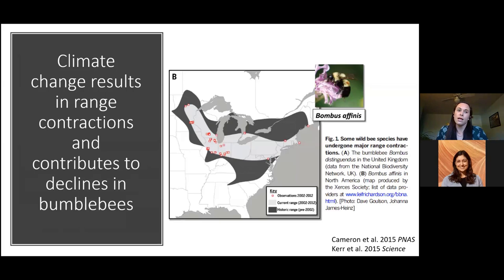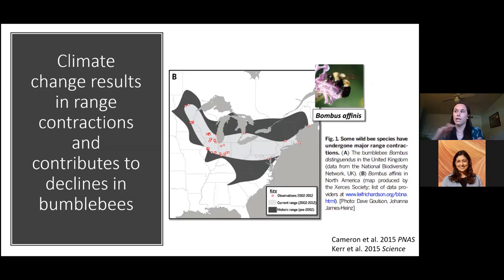Another way climate change is affecting pollinators is by causing range contractions, contributing to declines in bumblebees and likely other native bee species. This graph shows the historic range in dark gray of Bombus affinis — the one listed on the Endangered Species Act. Its range has contracted from both the north and the south, becoming much smaller. The light gray and red dots are the areas where it's still found, but it has lost a large portion of its original range. This is a big problem for many bee species.